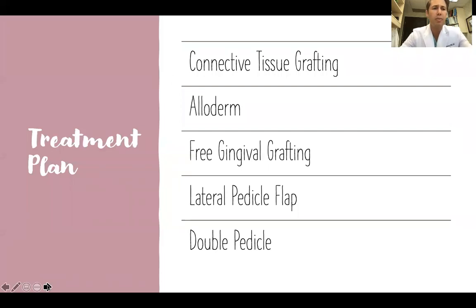When it comes to treatment planning, different options are considered based on patient goals, health history, and a variety of other factors. This patient is osteoporotic and has been on oral bisphosphonates for 10-plus years, which plays a key factor in the treatment planning process. One of the first options — our gold standard for root coverage procedures — is connective tissue grafting.